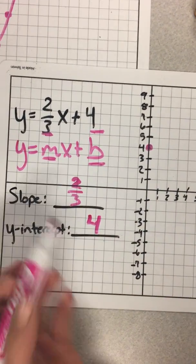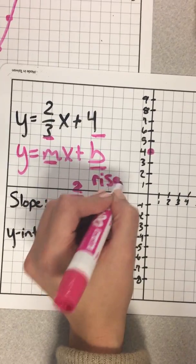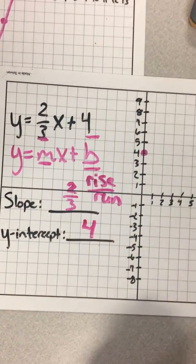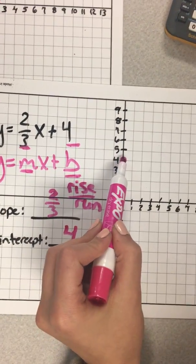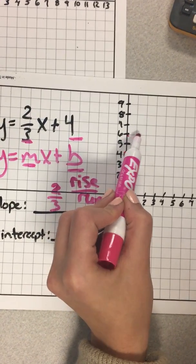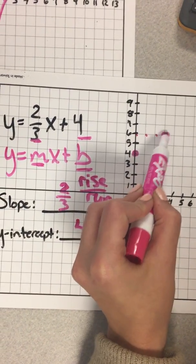And now I have a slope of 2 over 3, which is my rise over run, remember? So I'm going to go rising up 2, and I'm going to run 3: 1, 2, 3. There's my next point.